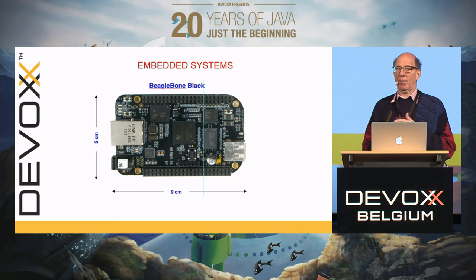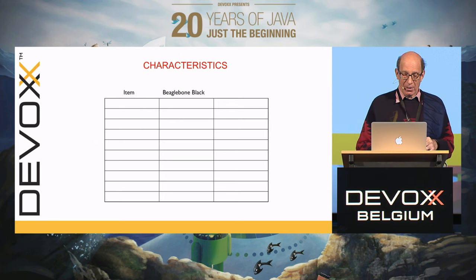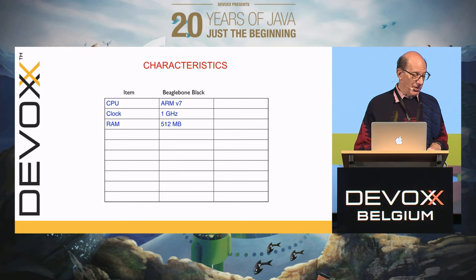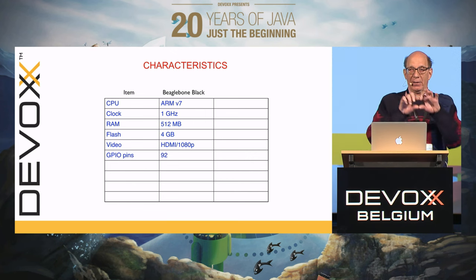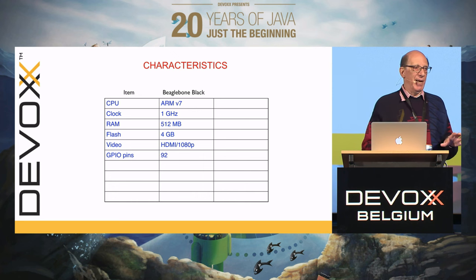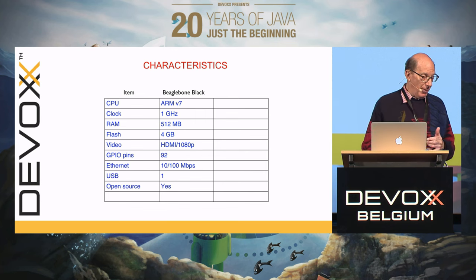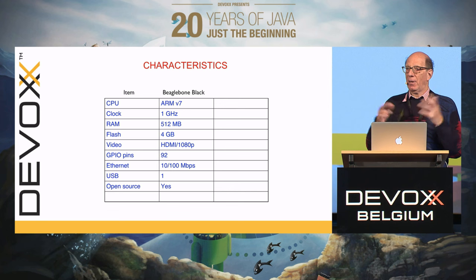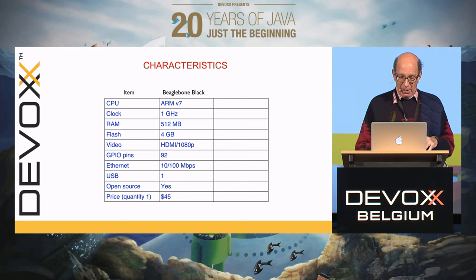We began looking at embedded systems, for example the BeagleBone Black — a very nice open source hardware board costing about $50, about the size of a smartphone. It has an ARM v7 CPU clocked at a gigahertz, half a gig of RAM, four gigs of flash memory as an on-board disk, 1080p video, 92 GPIO pins you can control in software, 100 megabit Ethernet, and a USB port. It's open source so all the board specifications are publicly available.